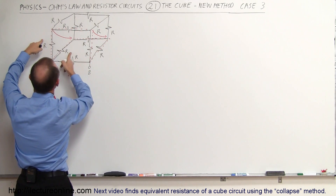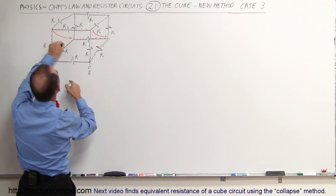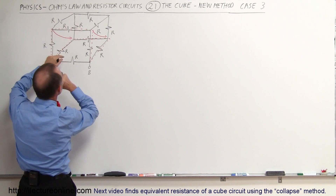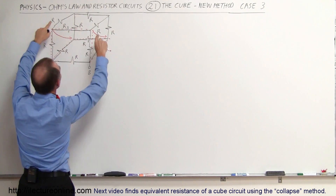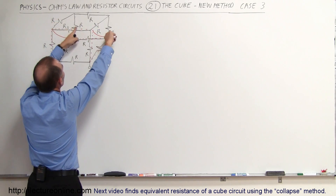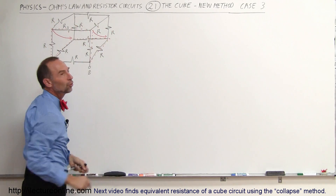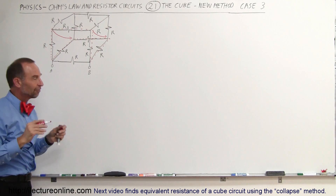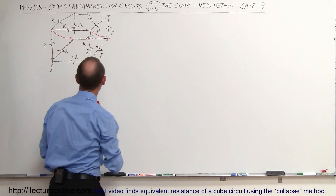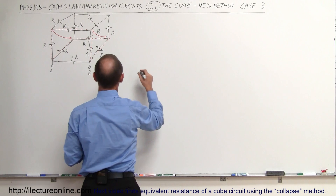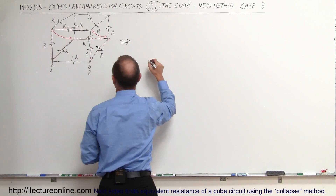We put these together so that these resistors will combine by collapsing. This resistor will collapse onto this resistor, and these two resistors will collapse onto these resistors right there — simply squishing it into a flat circuit. When we do that and collapse it, we end up with an equivalent flat circuit.